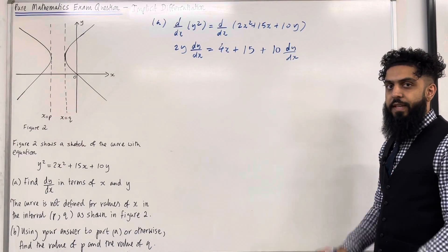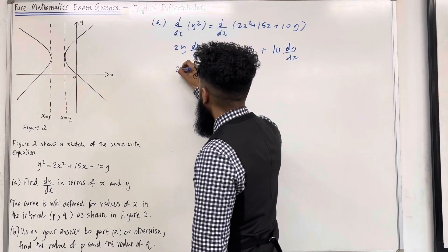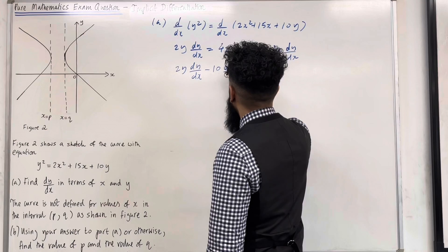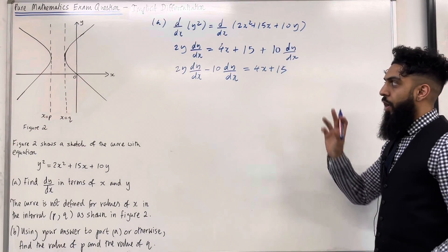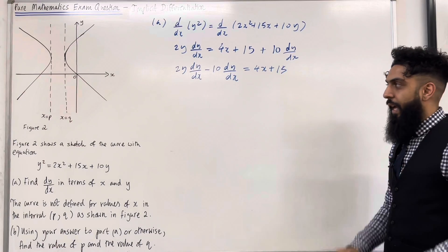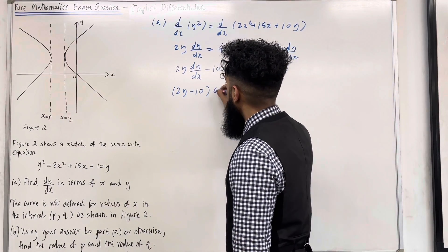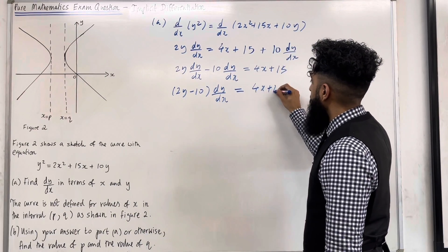So now I'm going to collect my dy over dx. I can take it to the left-hand side. So I've got 2y dy over dx minus 10 dy over dx equal 4x plus 15. I've got a common factor of dy over dx. I can take out the common factor. This gives me 2y minus 10 dy over dx outside the bracket equal 4x plus 15.